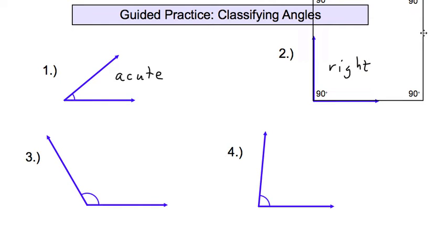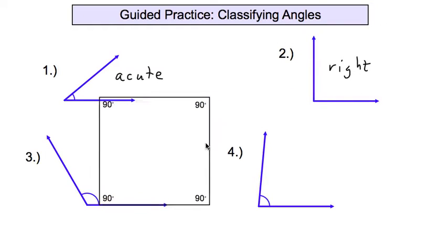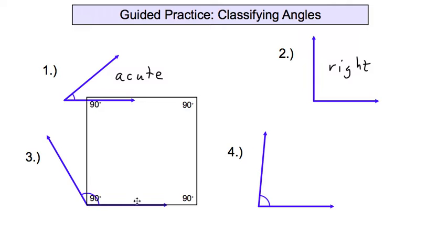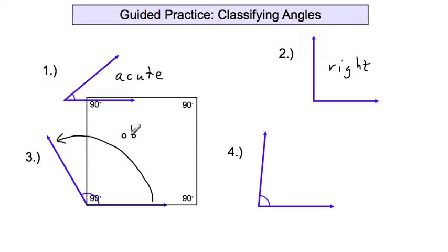Number three — taking a look at number three with our square corner. Put it right on the vertex. Now our angle is forming something that is more than 90 degrees. Less than 90 degrees would be not all the way up to 90 degrees, but this one actually goes past. Measuring from one ray to the other, see how it passes the 90 degrees — so that would be called obtuse.